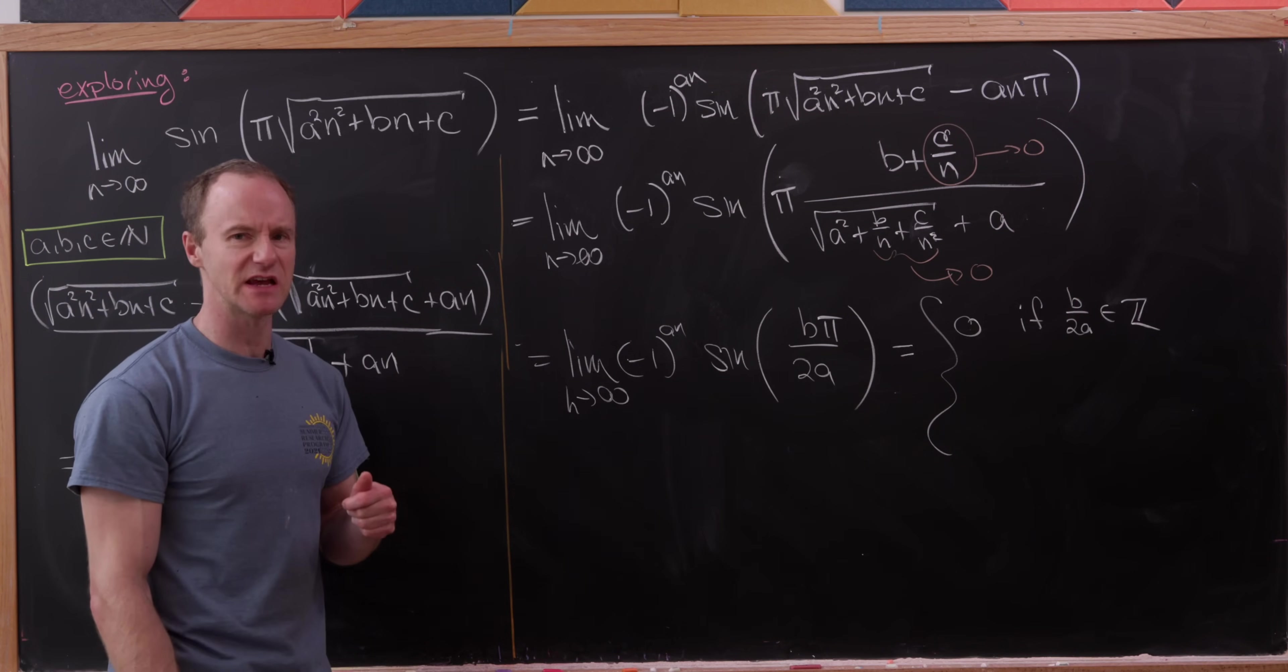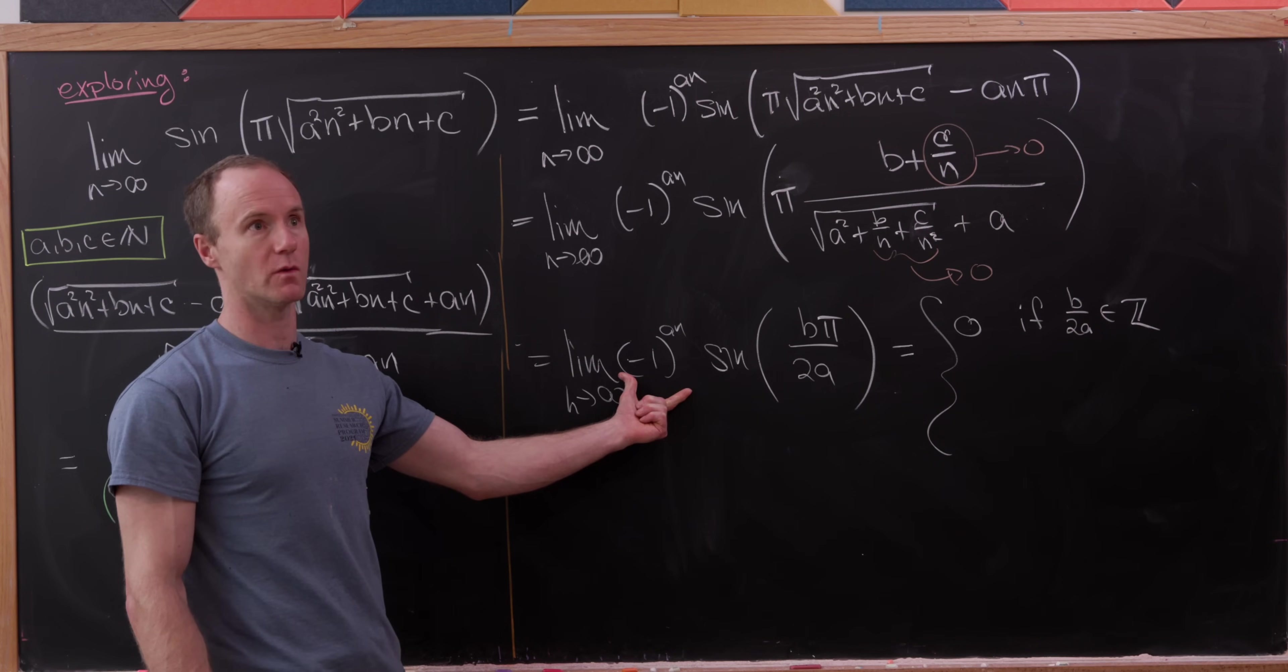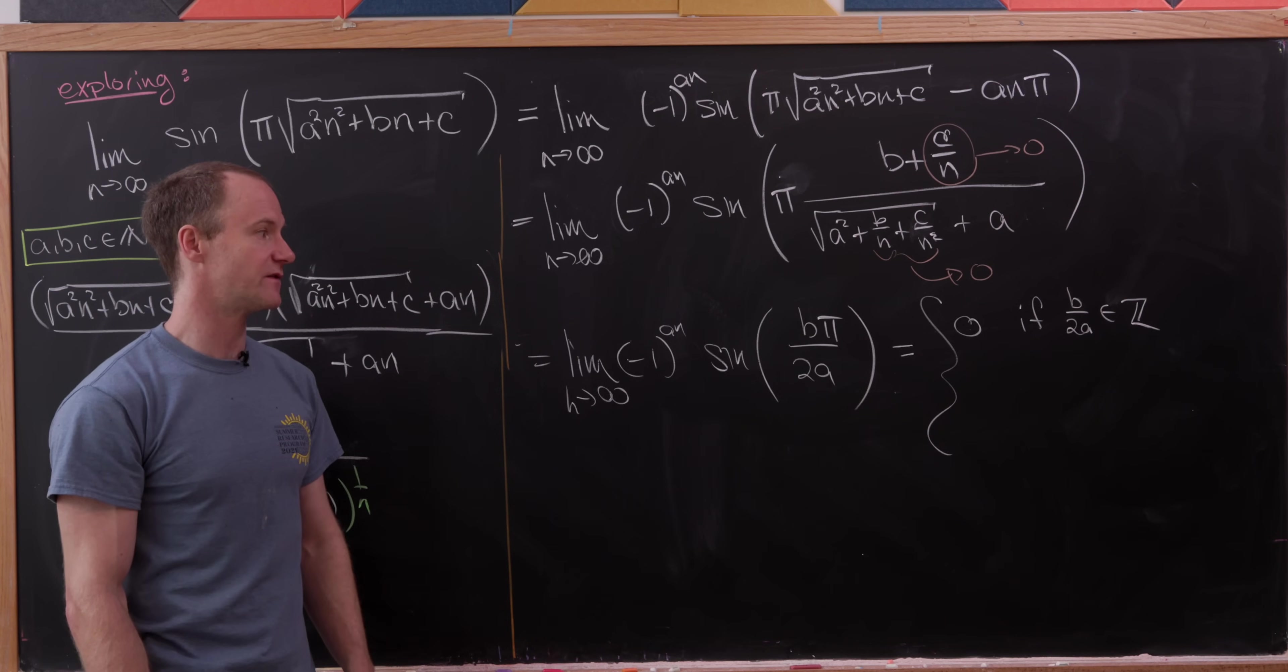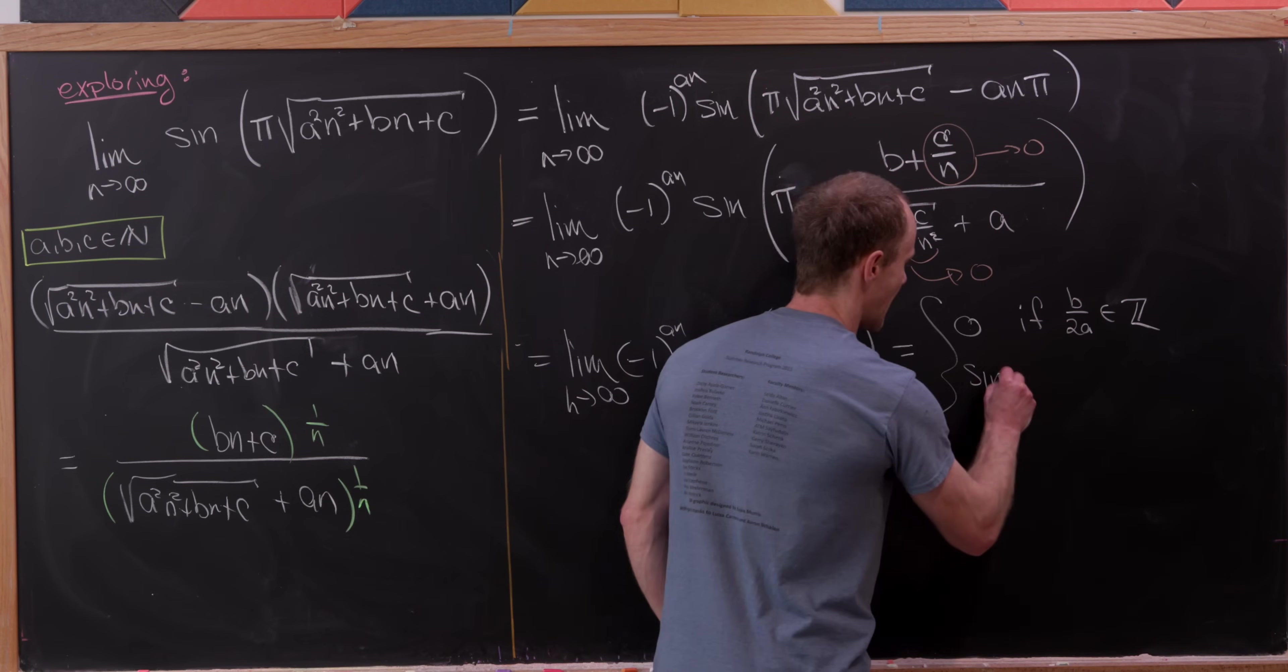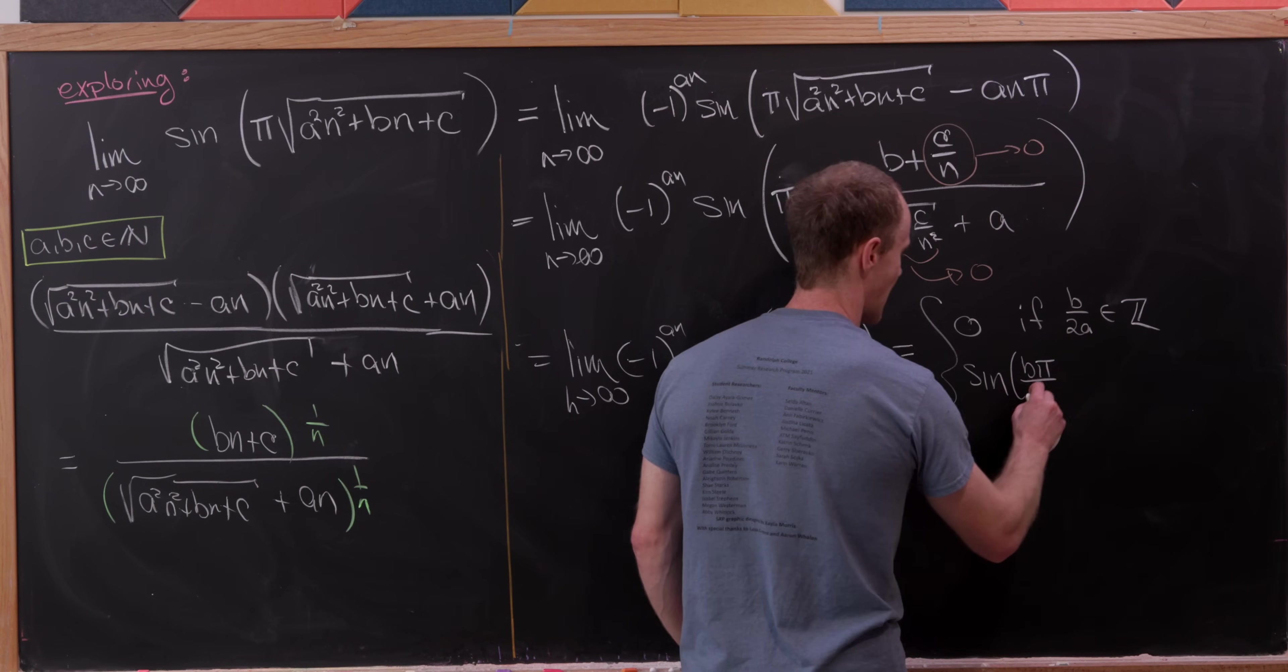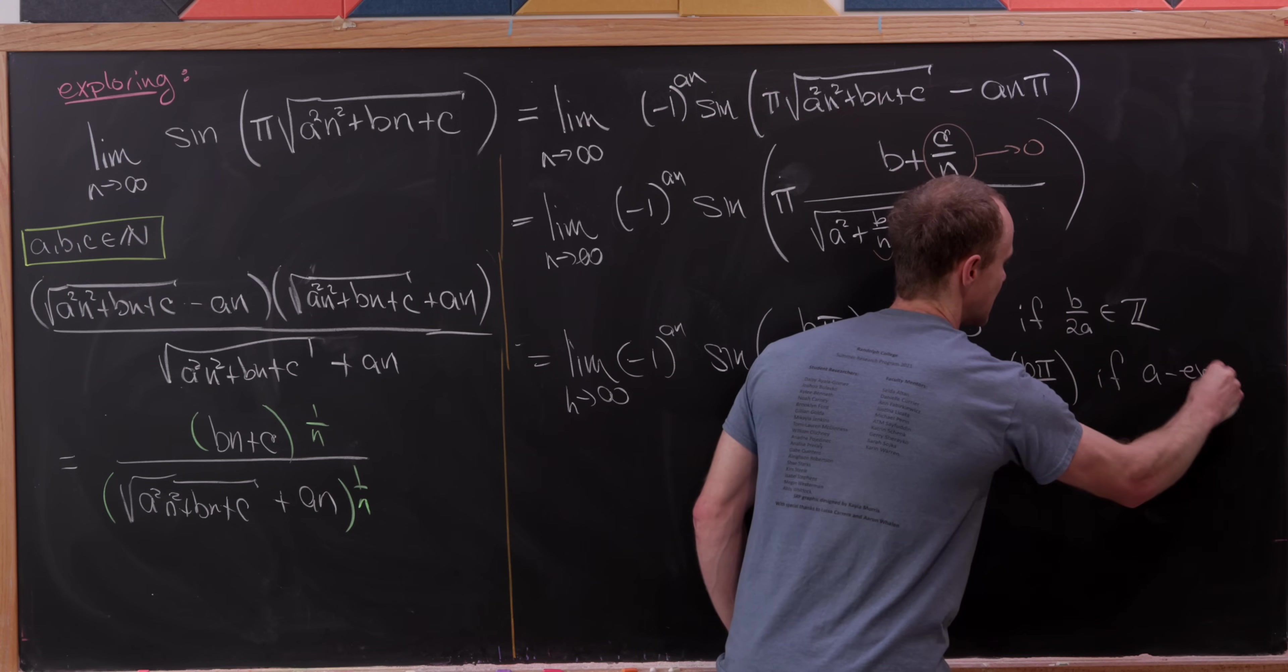And now let's notice if a is even, then this thing out here is always positive. And then that's going to simply approach sine of bπ over 2a. So that doesn't require b over 2a to be an integer. So this turns into sine of bπ over 2a if a is even.